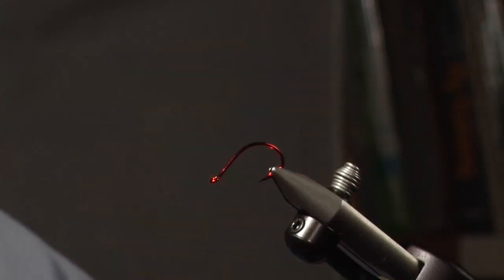This fly, this pattern right here is what I call a larvalace worm. It's got kind of a unique hook on it. I like it because of the bend and the color, and it's a Gamagatsu 1-0 straight eye, it's called a drop shot hook.